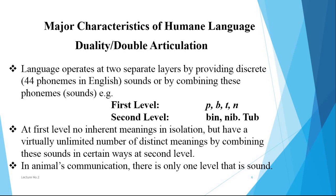Duality, or double articulation, is another characteristic of human language. Language operates at two separate layers: at the first level we have discrete sounds or phonemes — for example, 'p', 'b', 't', 'n' — and at the second level we have words formed by combining these sounds, like 'bin', 'nip', and 'tab'. No inherent meanings are produced at the first level in isolation, but combining sounds in certain ways at the second level produces a virtually unlimited number of distinct meanings. Animal communication is based on sounds only and does not have this second level.